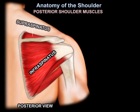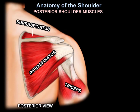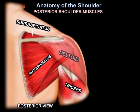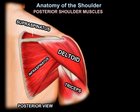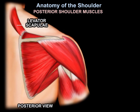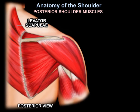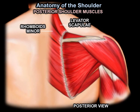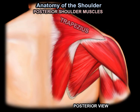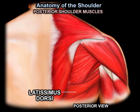The supraspinatus, the triceps, and the deltoid muscles from the posterior aspect. The levator scapula, the rhomboids minor and rhomboids major, the trapezius, and the latissimus dorsi.